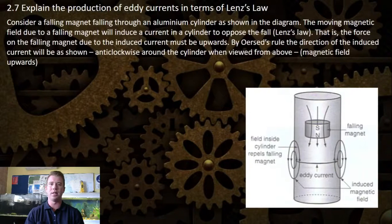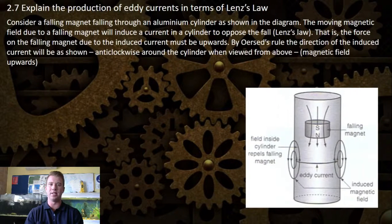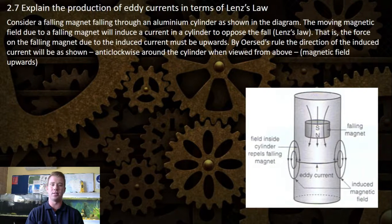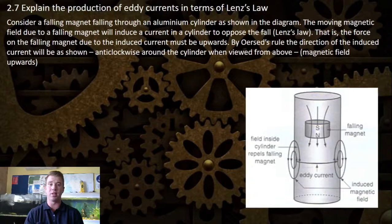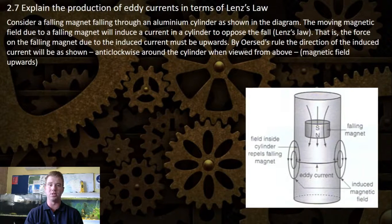2.7: Explain the production of eddy currents in terms of Lenz's Law. We need to refer to this diagram when describing this. Consider a falling magnet falling through an aluminium cylinder as shown in the diagram.